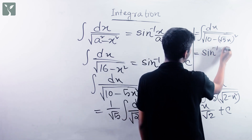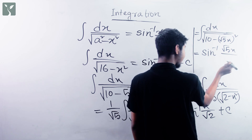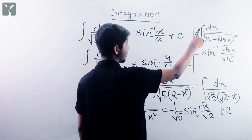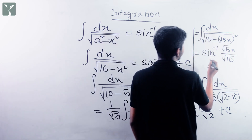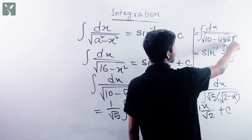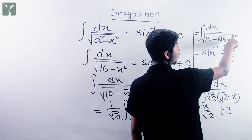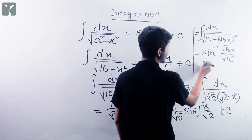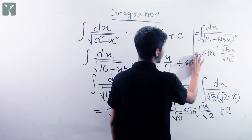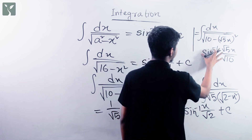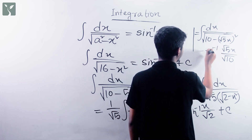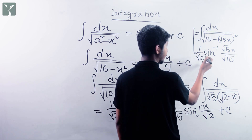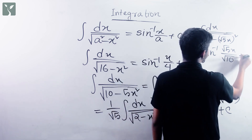The argument becomes root 5x by a, where a is root 10 since a square is 10. We also get the factor 1 by root 5 out front. So the final answer is 1 by root 5 times sin inverse of root 5x by root 10, plus c — which is the same answer as before.